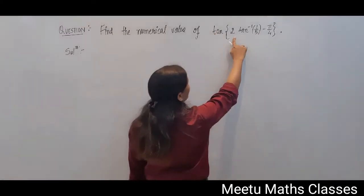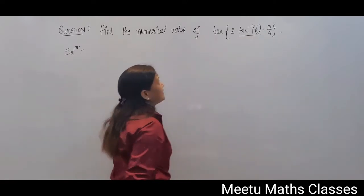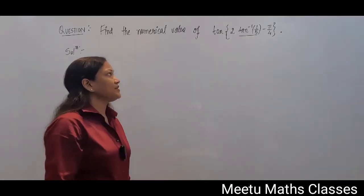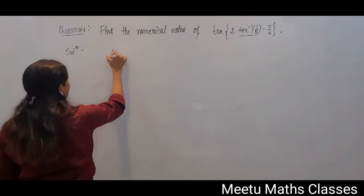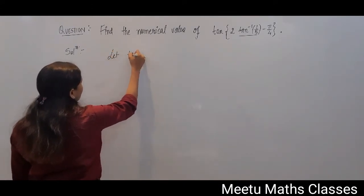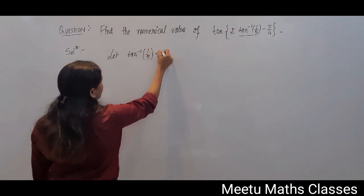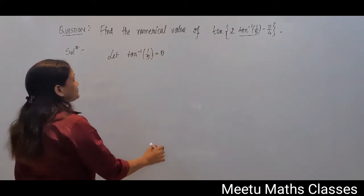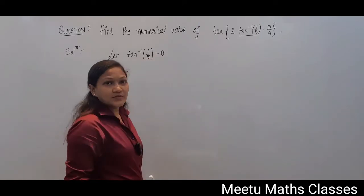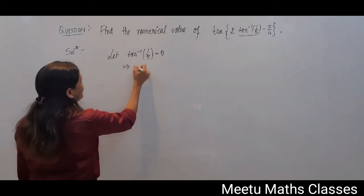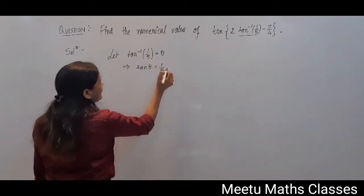In this function there is an angle defined as tan⁻¹(1/5). First of all, we are going to suppose that tan⁻¹(1/5) equals θ. If tan⁻¹(1/5) equals θ, then tan θ equals 1/5.